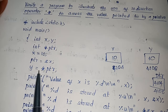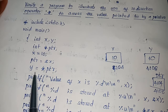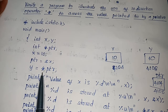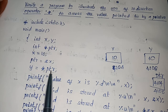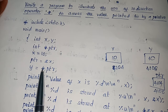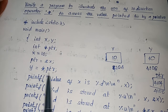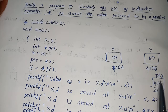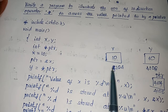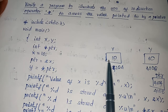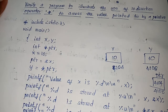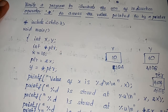Coming to the next statement: y = *ptr. This is not a declaration statement, so this star is the dereferencing operator. The dereferencing operator goes to ptr, collects the address stored in ptr, moves back to that particular address, and collects the value. As soon as this statement is encountered, it goes directly to ptr, collects address 4104, goes to that address, gets the value, and stores it in y. So now y contains the value 10.